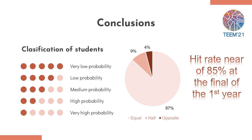The idea is that if we have this information in the first part of the first academic year, tutors can apply solutions, follow these students, and help them identify the problem — trying to solve it before a dropout occurs.